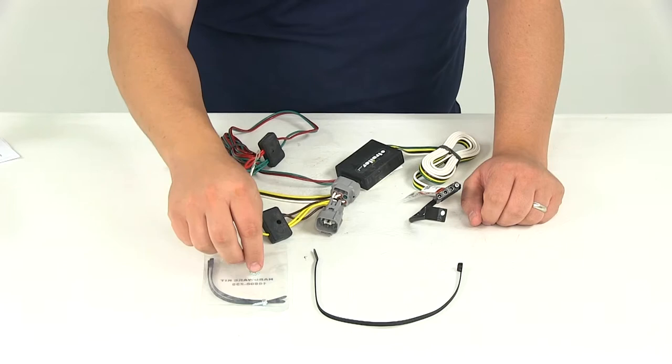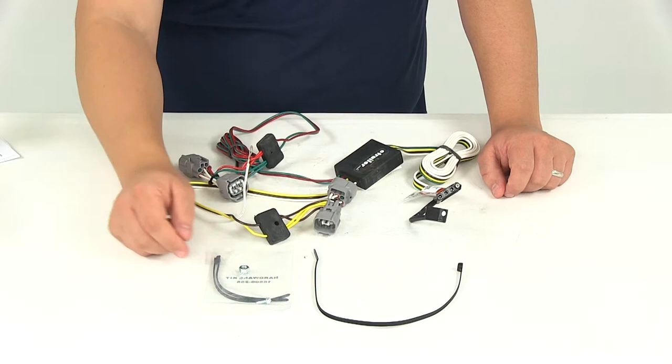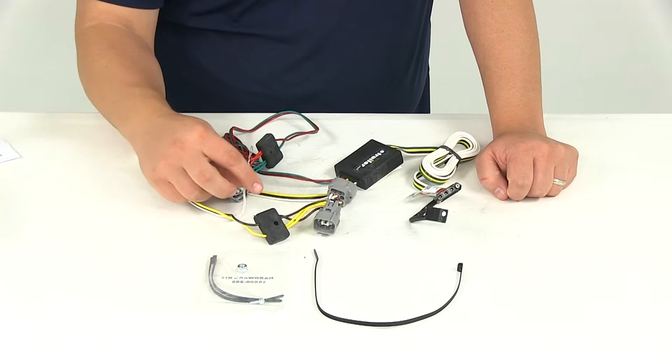The nut and the self-tapping screw are designed to secure the ring terminal for the ground connection depending on your application. You're going to have to either drill into a nice clean metal surface, or you can use the nut and attach it to a pre-existing ground connection.